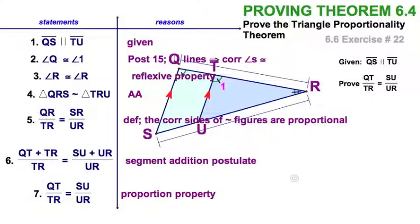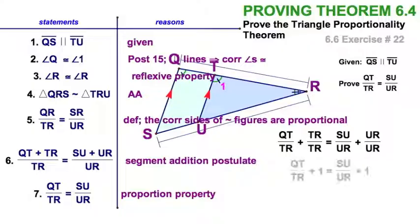If you want to do it with algebra, just separate. Separate your fractions out like this. Okay. And I can see that each of these, I've got TR over TR, UR over UR, and that's going to simplify to 1 over 1. And subtract 1 from both sides of the equation. Same result. Same result. Right.